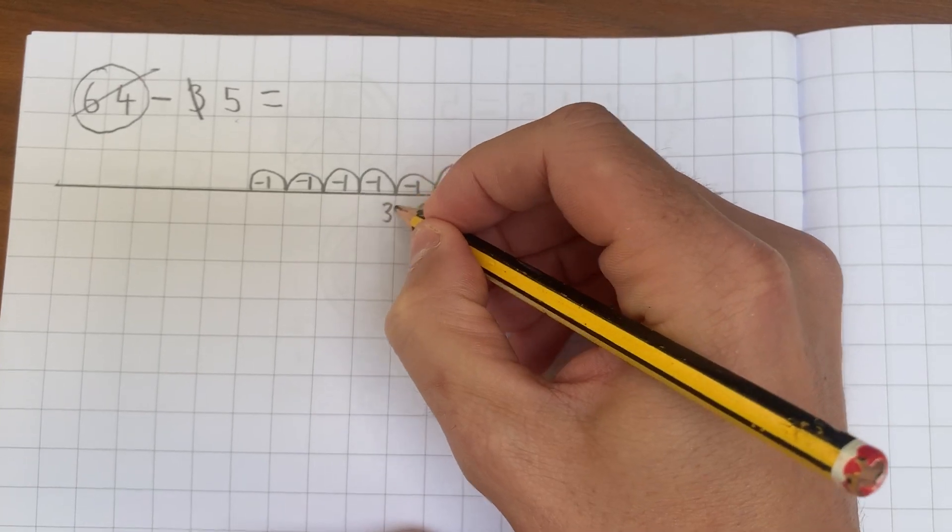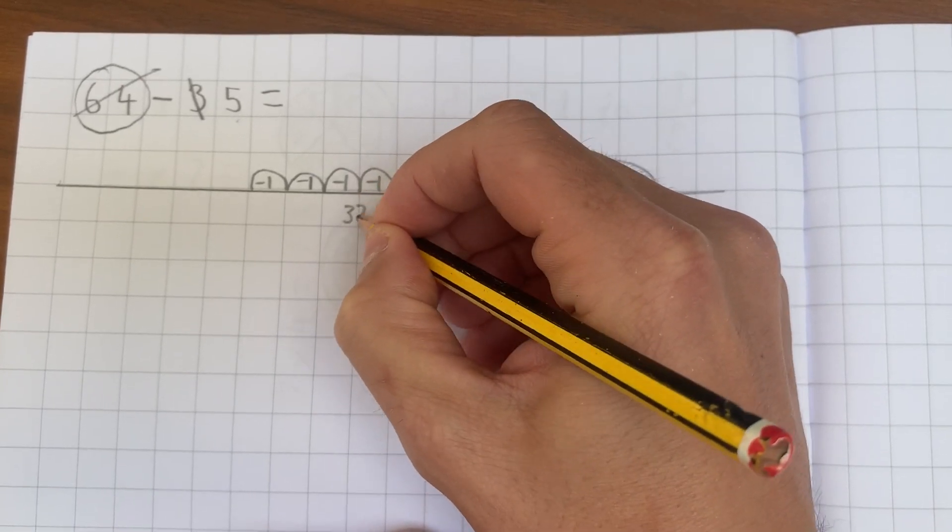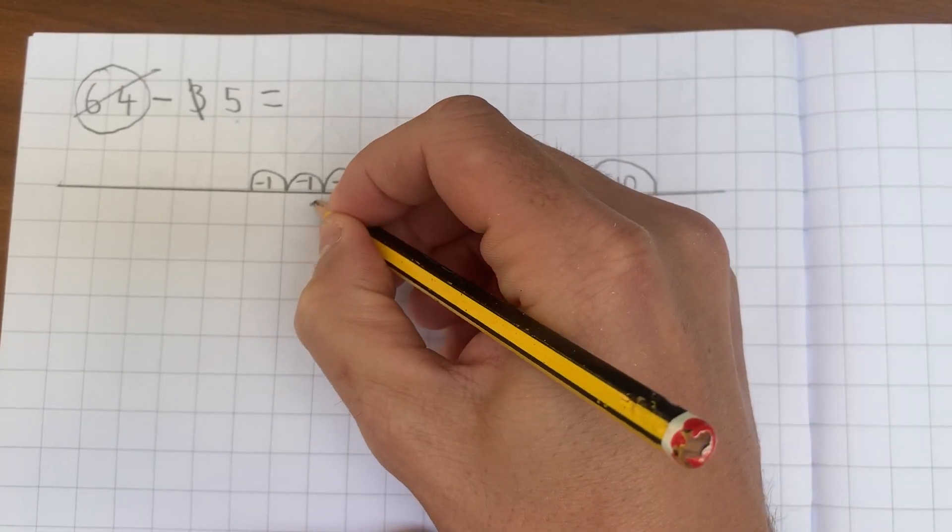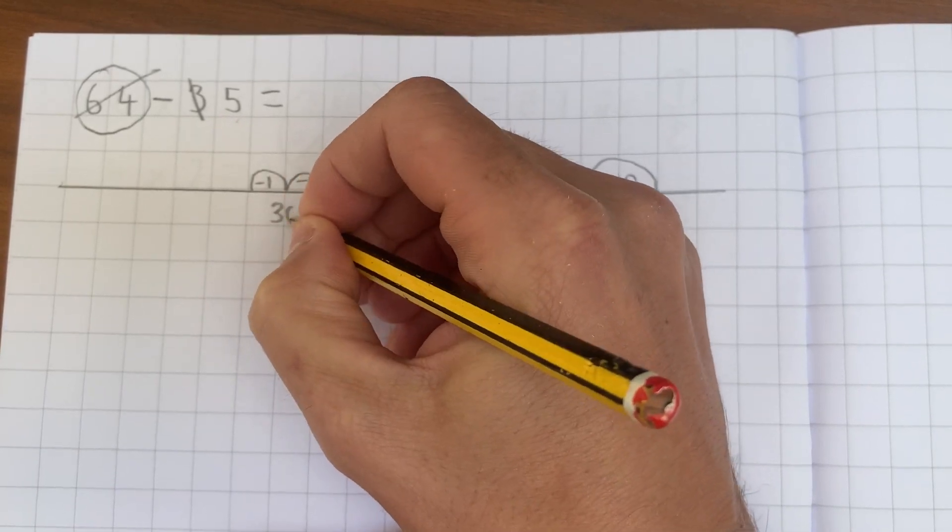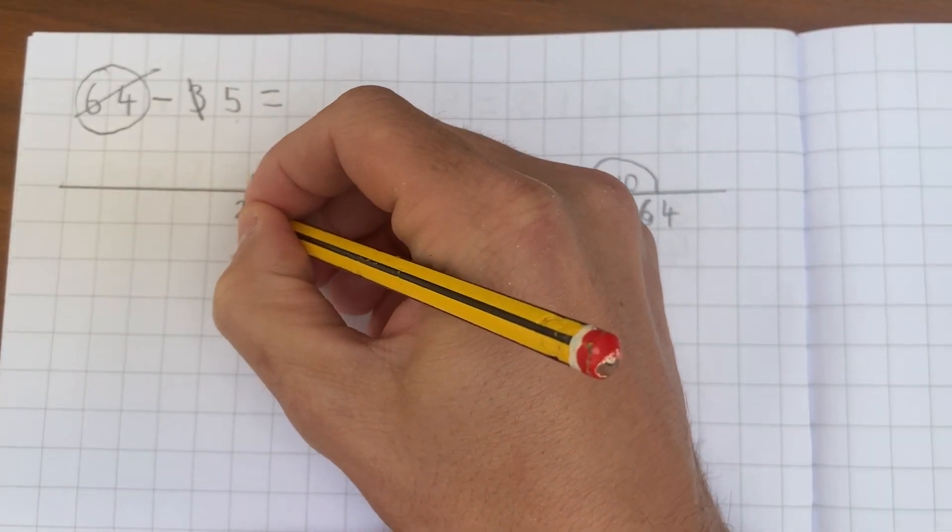So it's going to be 34, back to 33, 32, 31, 30, and then into my next ten, so 29.